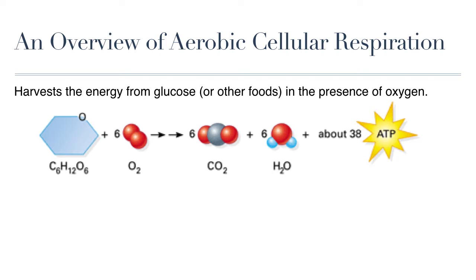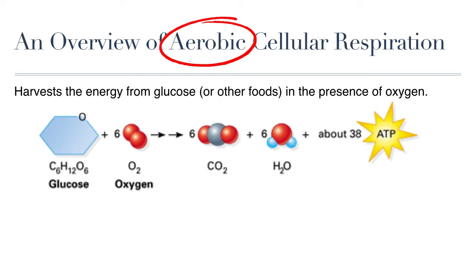Let's take a look at the overall equation for aerobic cellular respiration. It is called aerobic because this process requires air in the form of oxygen gas to transfer the energy in food into many molecules called ATP. ATP is the only energy currency the cell will accept for doing work. In the process, carbon dioxide gas and water are produced. The carbon dioxide gas is exhaled as a waste product and the water stays to be used by cells.